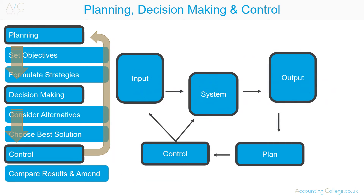Internally sourced information produced largely for control purposes is called feedback. Here is a feedback loop to illustrate the planning, decision making and control process. Feedback is often used to evaluate and set corrective actions to a plan. Based on the feedback, management can decide to keep the original plan and let it work, take corrective action, or formulate a new plan. This feedback can be in the form of financial or performance reports.